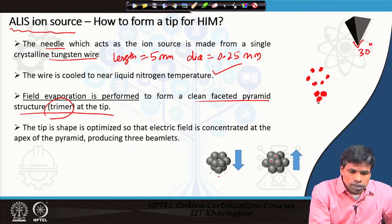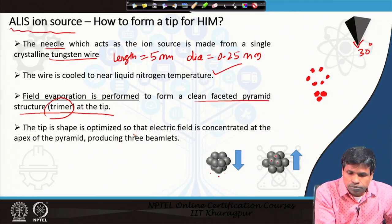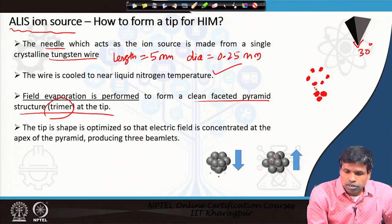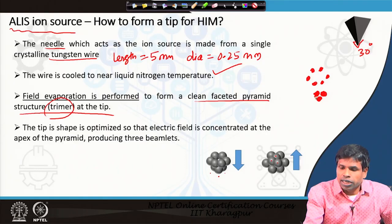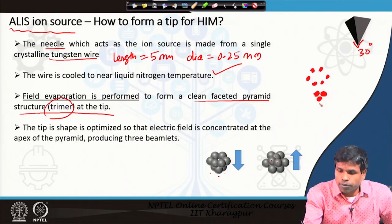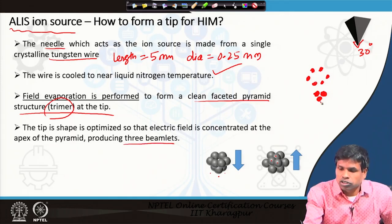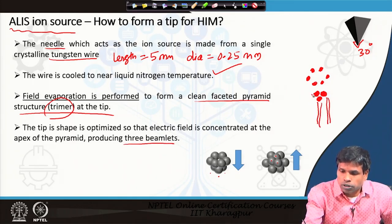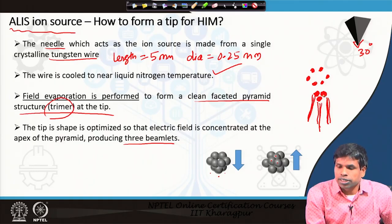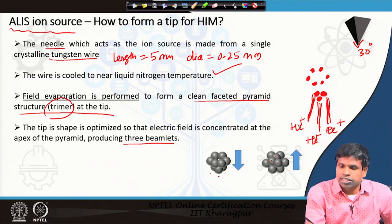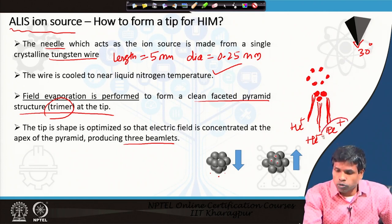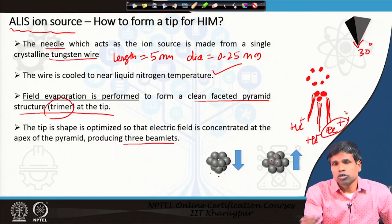When the tip shape is optimized in this trimer fashion and we apply the field, the field is concentrated at the trimer, producing 3 ion beamlets. When helium atoms come in contact with those 3 atoms, they are ionized and we get 3 beamlets of helium ions. One of these beamlets is utilized for microscopy purposes and the other two are not.